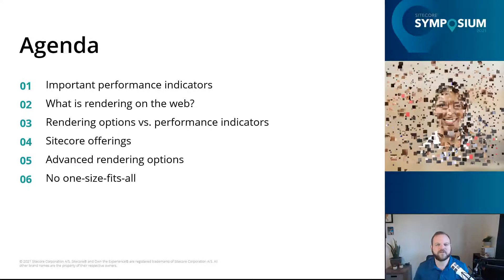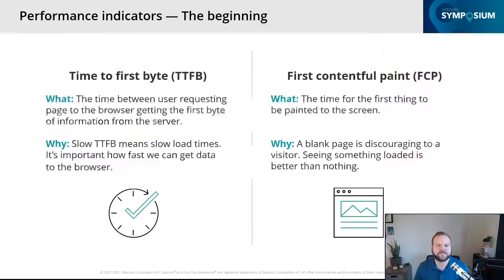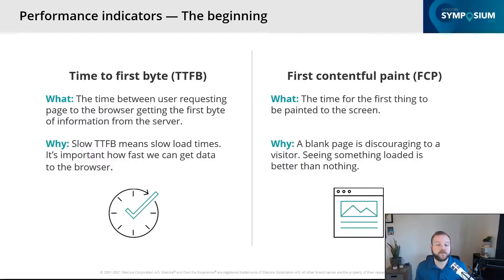Let's look at performance indicators. I've broken these up into two categories: beginning indicators and ending indicators. Beginning indicators are things that generally happen in the early stages of our rendering process. First on the left is time to first byte — the time between the user requesting the page and the browser getting its first byte of information from the server. A slow time to first byte means slow load times and possibly too much work happening on the server.